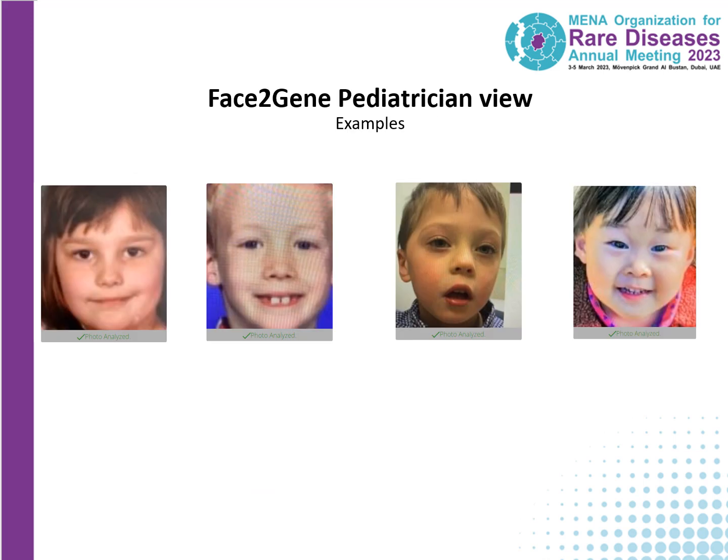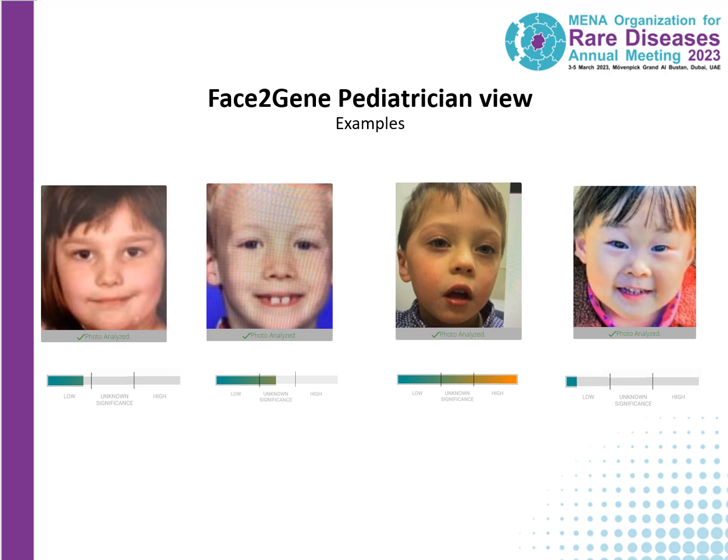Here's an example of four photographs of children — this pediatrician view tool is directed towards pediatric patients, so this is the age range that works best. When you look at these images, you might think: which ones of these would you refer to the medical geneticist if there were concerns? When we look at the pediatrician view, we see that the third patient from the left is the one who scores high for potentially having a genetic condition, whereas the other individuals score lower.